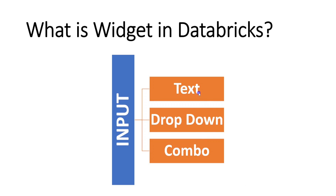The text box is free text — we can write anything and pass that as an input value. Drop down will have pre-populated listed values and we have to choose one among them. Combo box is similar to drop down but it allows choosing multiple values as input. These are the basic differences, and I will post another video about input widgets with more information.